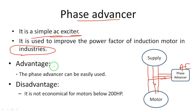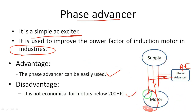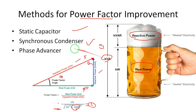Advantage of the phase advancer: it can be easily used. Disadvantage: it is not economical for motors below 200 HP. This method is used to improve the power factor of induction motors in industries. These are the three main methods to improve the power factor. I hope you understand the concept of methods for improving the power factor.